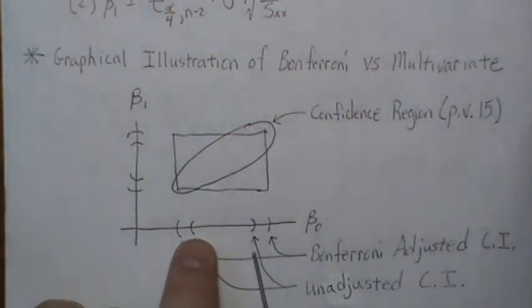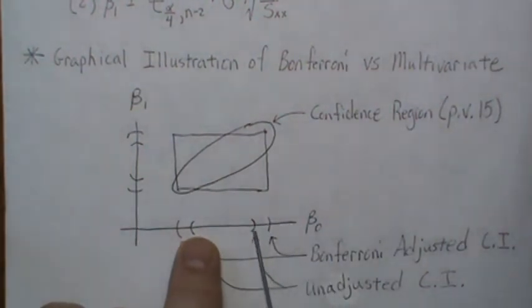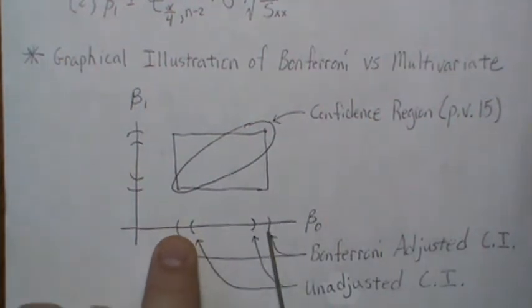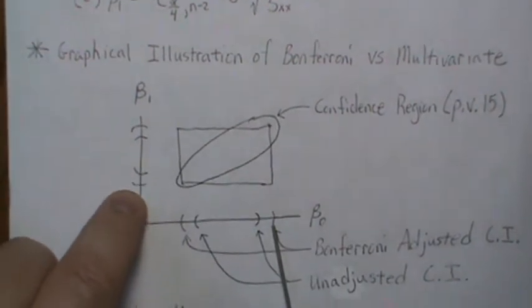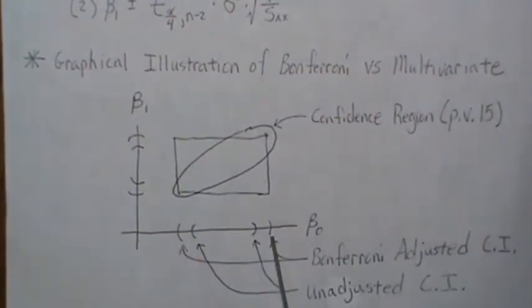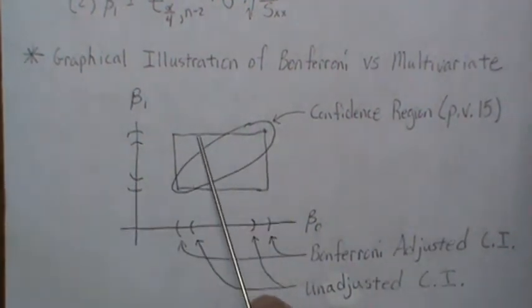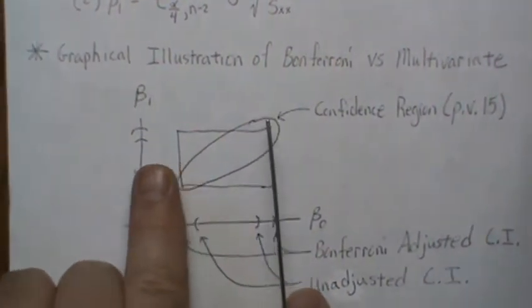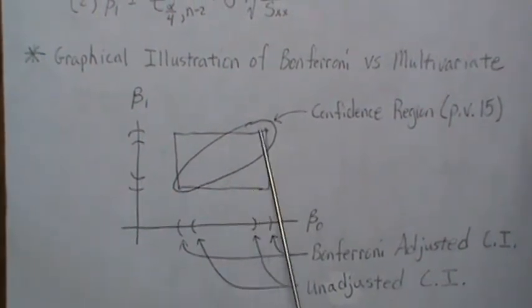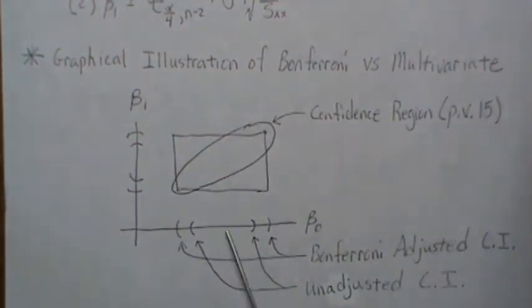In this video, if we conduct each test at the alpha level, we get these inner pieces. But if we Bonferroni adjust, it actually makes them go wider, and the same here with beta 0. If we look at the region cut out by the Bonferroni adjusted confidence levels, it may look something like this. Essentially it decreases here and here, but there are some pieces outside the original region. This is a graphical illustration of what's going on.